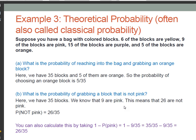How about example three? This example focuses on theoretical probability, which is often sometimes called classical probability, really depending on your textbook. In this case, suppose you have a bag of colored blocks. Six of those blocks are yellow, nine of the blocks are pink, 15 of the blocks are purple, and five of the blocks are orange.